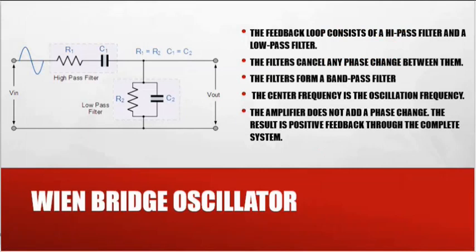The last oscillator we'll look at is called a Wien bridge oscillator. The basic circuit is that we have a high pass filter and we have a low pass filter, and what that does is it forms a band pass filter and it's tuned for a specific frequency. The center frequency is the oscillation frequency of it. The amplifier does not add a phase change. The result is positive feedback through the complete system.